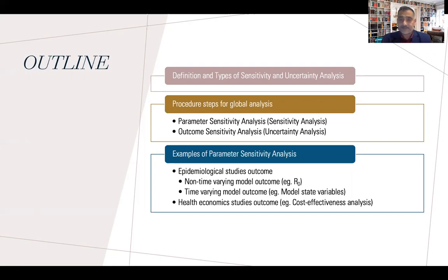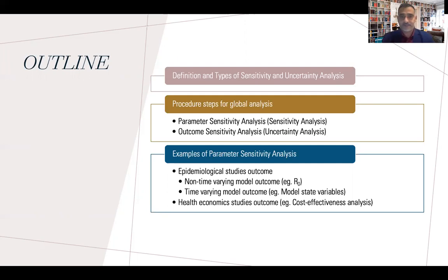After giving the procedure, I will talk about examples from epidemic modeling — specifically a well-known threshold quantity called the reproduction number, which is not time-dependent. It defines the intensity of an outbreak. I will also show results for time-varying model outcomes, and then discuss a very interesting point from health economics studies: cost-effectiveness of interventions and how we perform sensitivity analysis there.